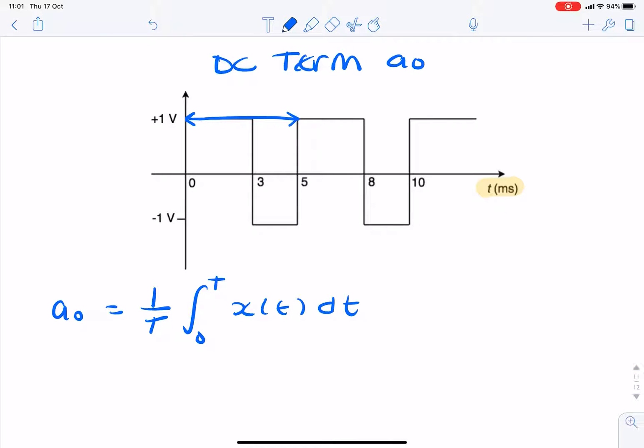So that's our period of 5 milliseconds. And we know that that's 2 milliseconds. So to find the average value, you could simply just find these two areas and then add them together. So it would be 1 over 5 times 5 times 1 plus 2 times minus 1,